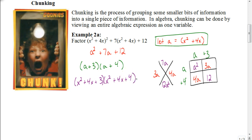And when I do that we get (x² + 4x + 3) and (x² + 4x + 4). Now I want to see if these two trinomials can be factored further. So I'm going to use my xbox method again.